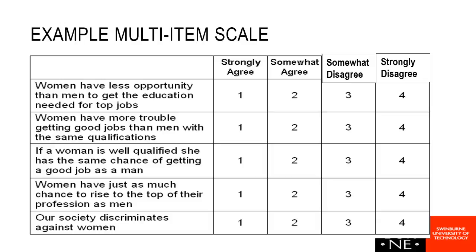We have five statements, and each of the statements relates to gender and gender discrimination. This probably wouldn't be regarded as a perfect scale, but we would expect most of the items to be correlated with one another — for example, if you strongly agreed that women are discriminated against, you'd probably also agree to statements about women having more trouble getting good jobs or less opportunity.